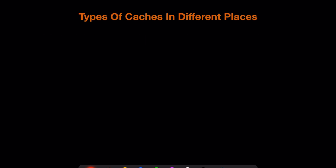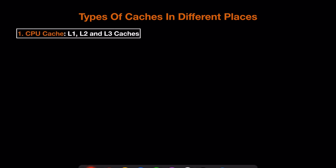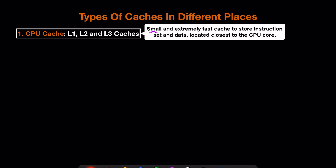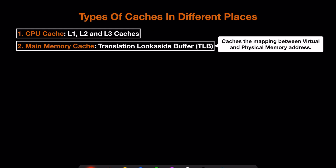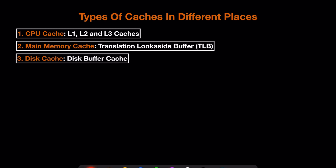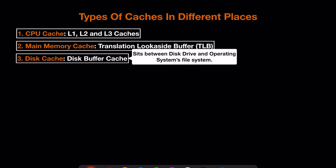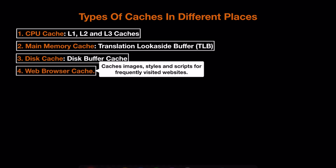There are different types of caches used in different places. First is CPU cache — we have L1, L2, and L3 types, which are very small, expensive, and extremely fast, storing instruction sets and data located close to the CPU. Then we have main memory cache, also known as Translation Lookaside Buffer (TLB), which caches the mapping between virtual and physical memory addresses. We also have disk cache, or disk buffer cache, which sits between the disk drive and the operating system's file system.